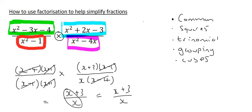And so in summary, when we are multiplying or dividing fractions, all you do is you factorize each part separately, and then you cancel.